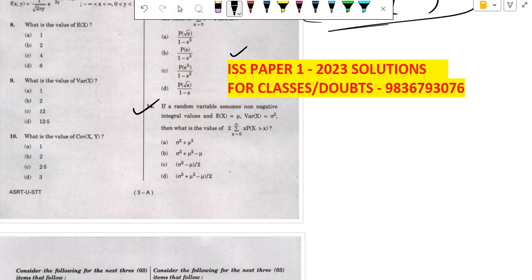How are you students, today we are solving question number 14. Random variable E(x) and variance are given, then find the value of 2 times summation of p(x) into probability of x greater than x.